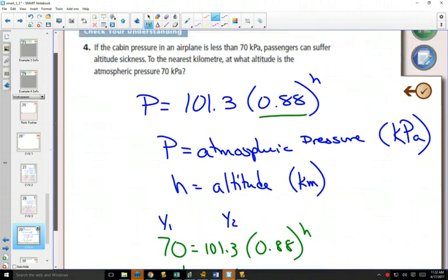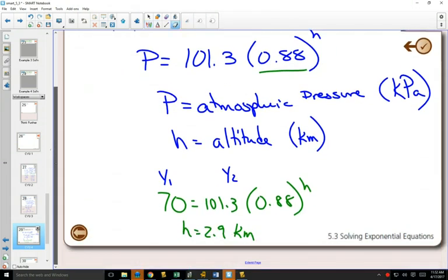Did it say to the nearest kilometer? To the nearest kilometer. So the nearest kilometer would be 3. So at 3 kilometers, you might feel altitude sickness.